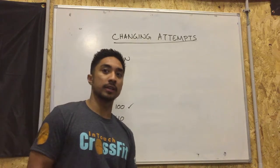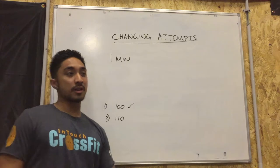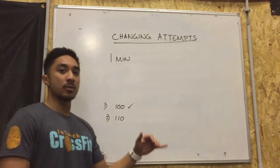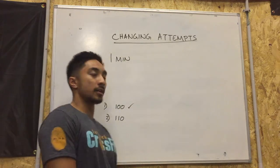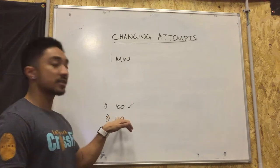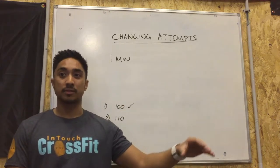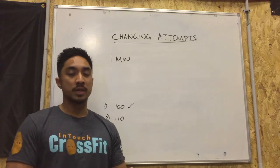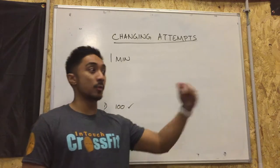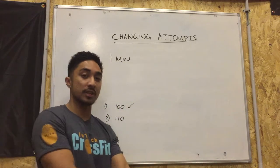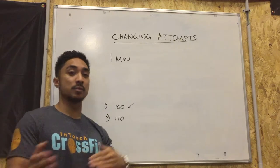Changing attempts — this is where it gets a bit complicated. Say for example if I squat 100 kilos, get three white lights, and tell the table I want to lift 110 for attempt number two, but then in the warm-up room I'm feeling really good and want to change it to 115. I need to advise the table, but I need to do this more than one minute from my next lift. There's an unwritten rule of doing it more or less two lifters before you.